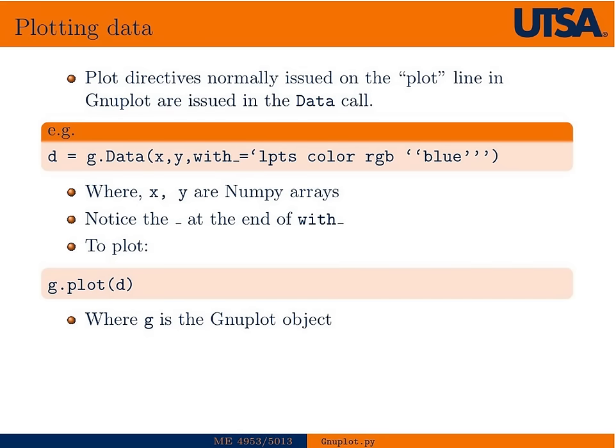So then to plot, in the most basic form, all you have to do is set up some data. If G is the Gnuplot object, then you just say G.Data, and then you'd fill in the arguments of the data method with your data, where X and Y could be NumPy arrays. Then you're going to issue the plot directives as you would in Gnuplot. So we would say 'with'...